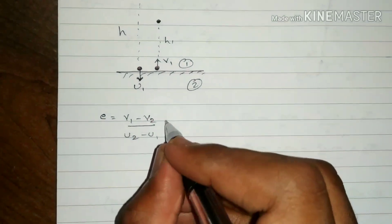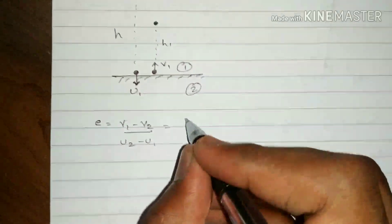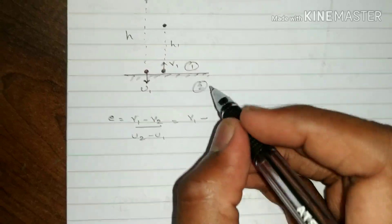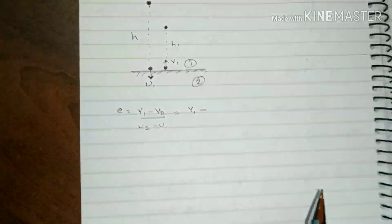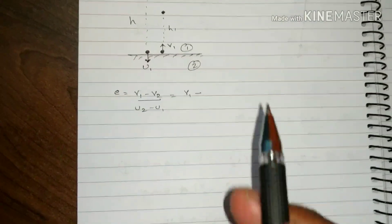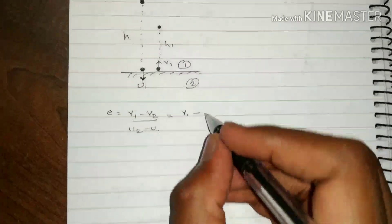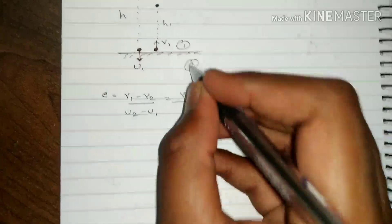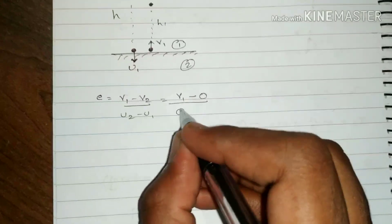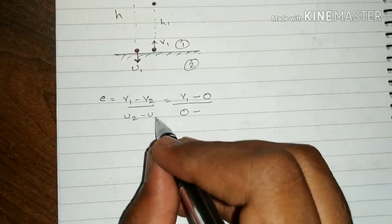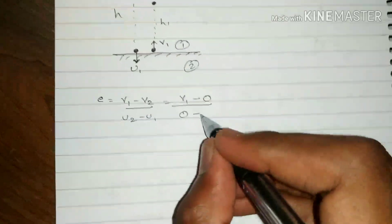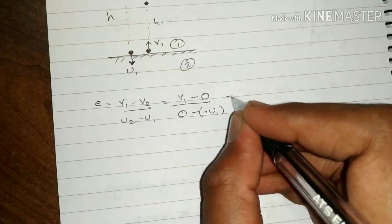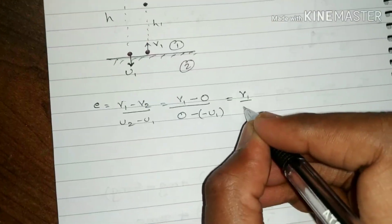Considering that, v1 stays as v1. Since the ball is going upward, I write v1 minus v2 where v2 is earth's velocity — obviously earth's velocity is 0 before and after bounce. So instead of v2, I write 0. For u2, since 2 is earth, its initial velocity is also 0. Since u1 is coming down, I write u1 as minus u1. This gives the expression as v1 upon u1.